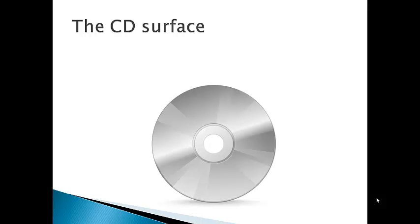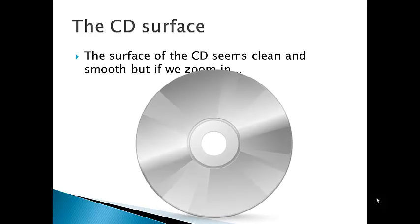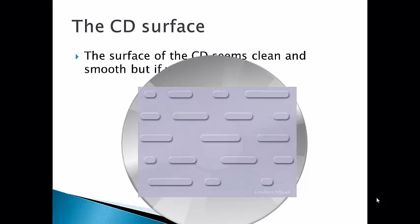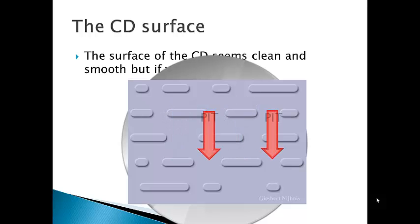Now, if we look at the surface of the CD, it seems clean and smooth, but if we zoom in, we will notice that on the reflective layer of the CD, there are many pits and lands. These are the lands, and these are the pits, written in a spiral-shaped track.